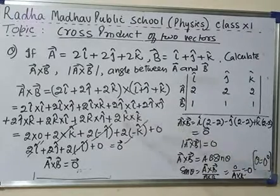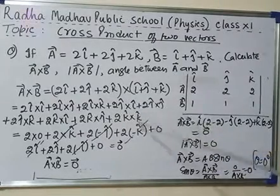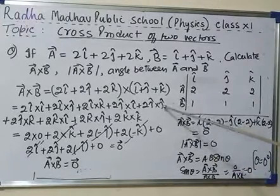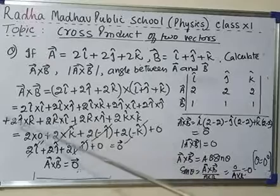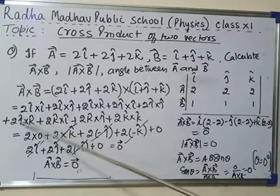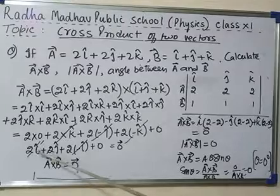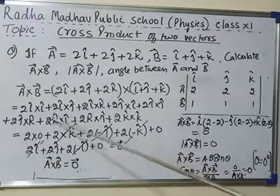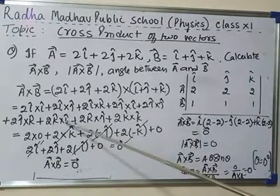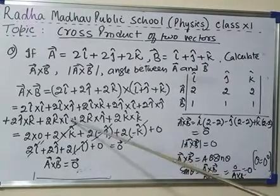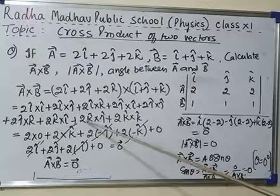Plus 2 j cross i is minus k, plus j cross j is 0, plus 2 j cross k is i cap, plus k cross i is j - that's 2j - plus 2 k cross j is minus i because j cross k is i so k cross j is minus i.